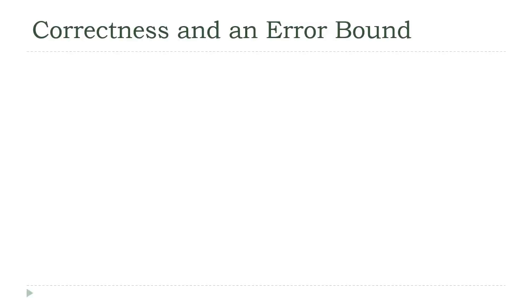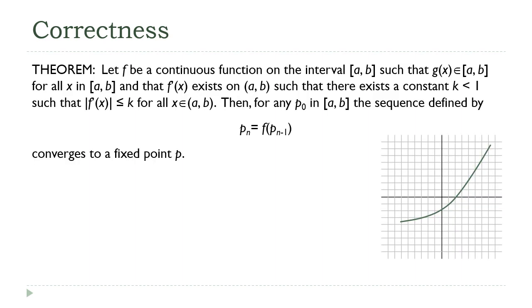In this lecture, we're going to show that the fixed point iteration method does do what we need it to do. We're going to prove the correctness of the algorithm, which means we're going to show that the sequence you get by iterating a function that has a fixed point on an interval, under the right circumstances, will converge to that fixed point. This is our convergence theorem, and there's a lot going on here, so let's work through and unpack all the detail.